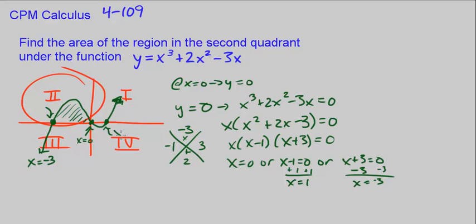So this point here on the graph is x equals negative 3. We already have x equals 0, and this is x equals 1. So the area under the curve in the second quadrant, the area equals the integral from negative 3 to 0 of our function, x cubed plus 2x squared minus 3x dx.